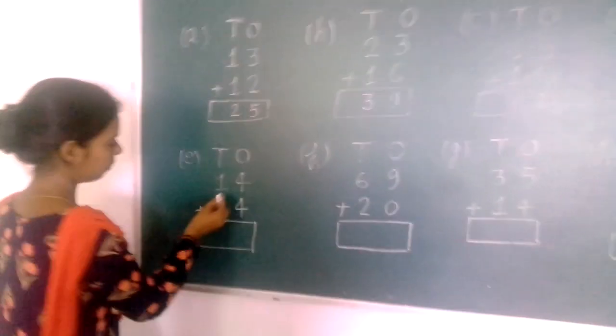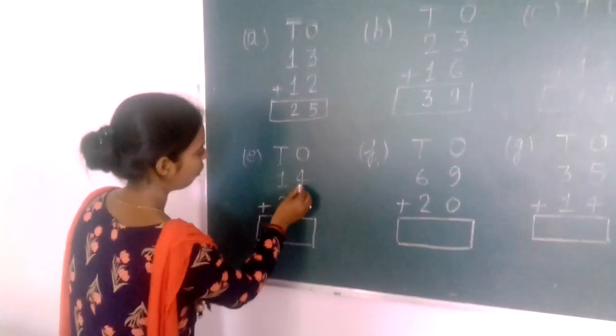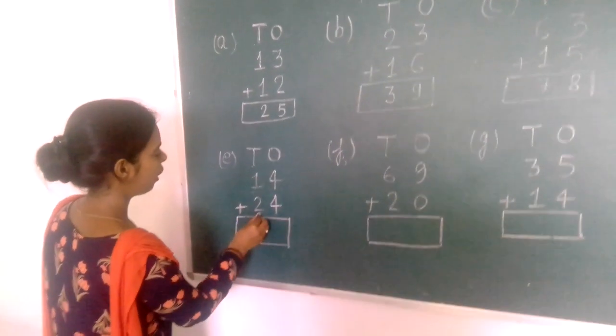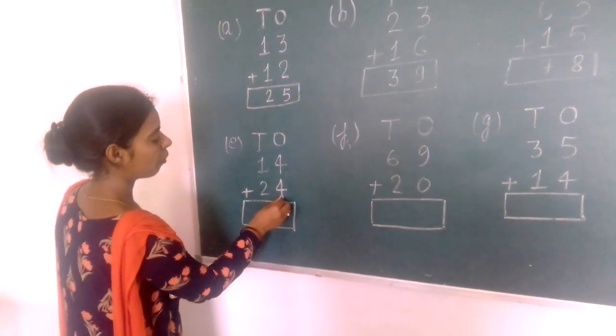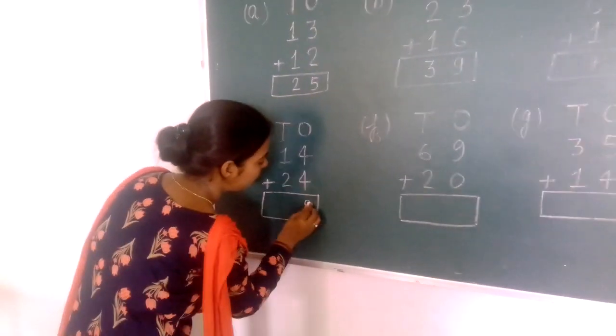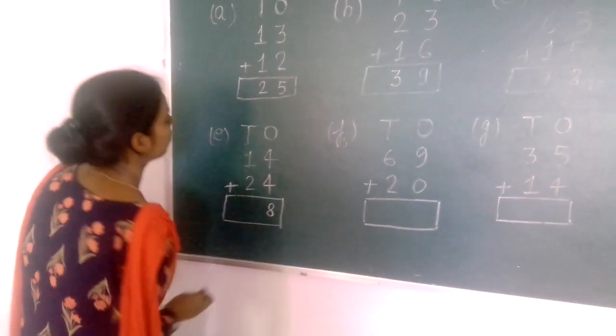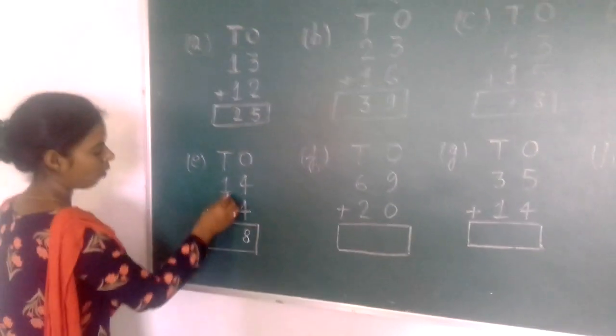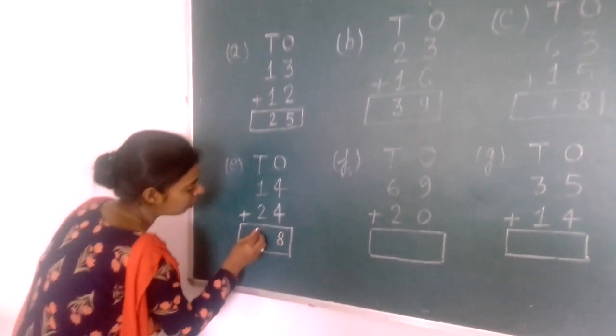Next: one ten, four ones (14) plus two tens, four ones (24). Four plus four equals eight. One ten plus two tens equals three tens.